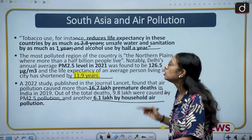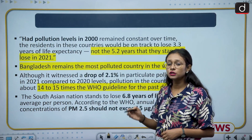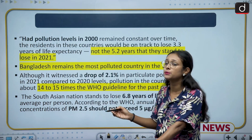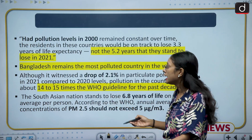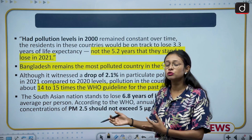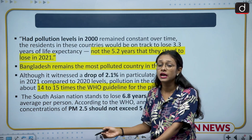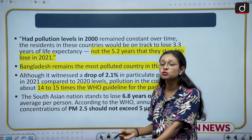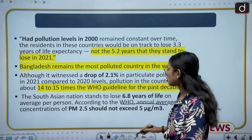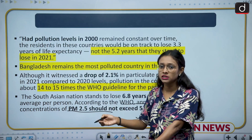Moving to the next slide — the report states that if pollution levels had remained at their 2000 levels, life expectancy would have decreased by only 3.2 years, but it has increased and now life expectancy has decreased by almost five years. The report also says Bangladesh is the most polluted country in the world, with India second. Pollution levels in Bangladesh are 14 to 15 times higher than the WHO limit, and in India 10 times higher than the WHO limit for annual average PM2.5 concentration.